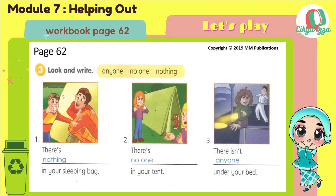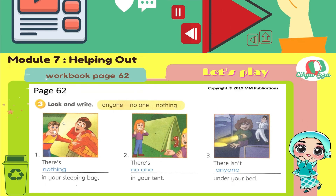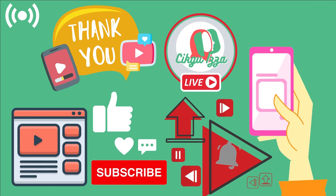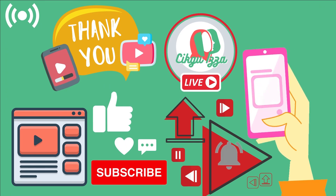Activity three: look and write. Look at the picture and look at the answer in the yellow box. Number one: There's nothing in your sleeping bag. Number two: There's no one in your tent. Number three: There isn't anyone under your bed. That's all for now. Don't forget to subscribe to my channel.